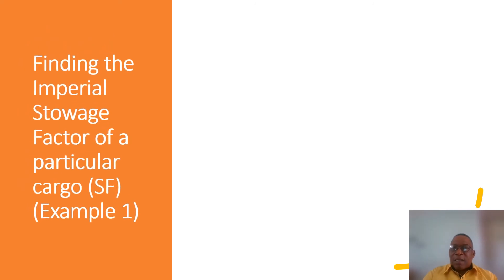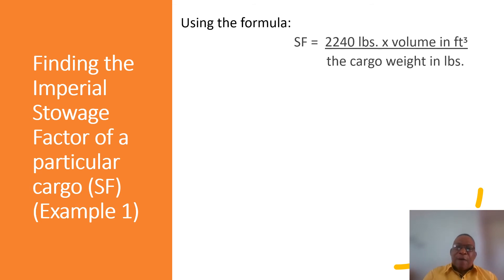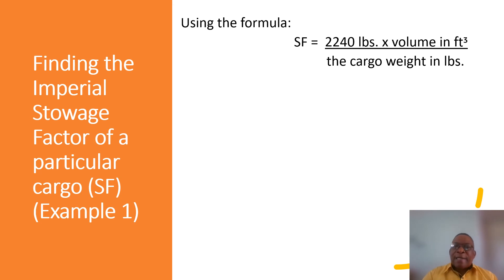Similarly, when we are given the weight in pounds and the volume in cubic feet, we can use this formula to find the imperial storage factor of the cargo. The formula is: storage factor equals 2240 pounds times the volume in cubic feet, divided by the cargo weight in pounds.